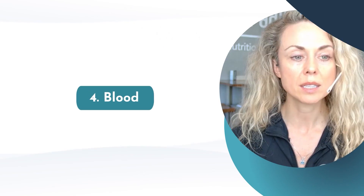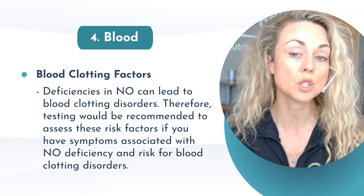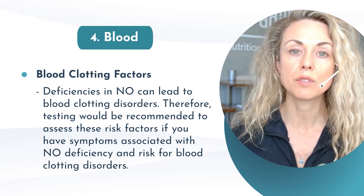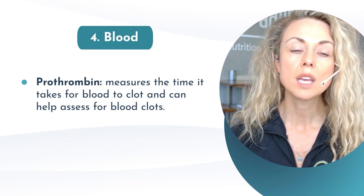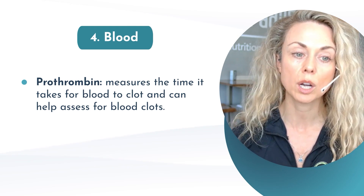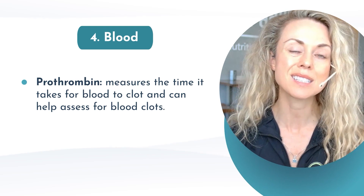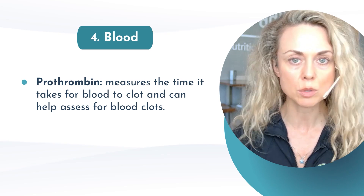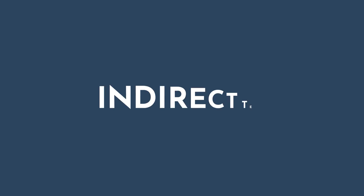Moving into blood testing: deficiencies in nitric oxide can lead to blood clotting disorders, so testing can be helpful if you suspect that. For example, prothrombin time measures how long it takes for blood to clot and can help assess overall clotting function. Plasma nitric oxide testing, however, is not the most reliable and is not frequently used or recommended. Now let's move into some of the indirect tests.